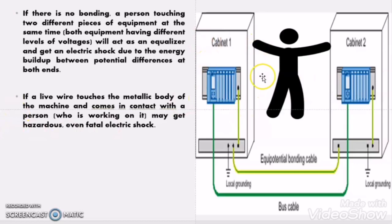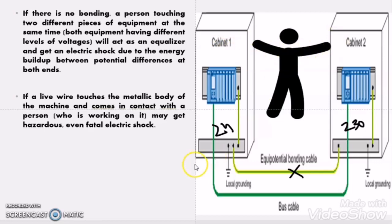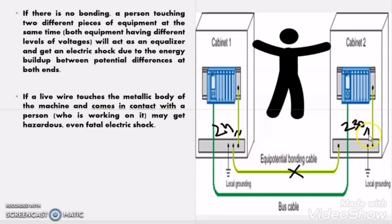Now let us take another scenario. Suppose one panel has a voltage level of 24V and another panel has a voltage level of 230V, and there is no equipotential bonding conductor. If any fault happens in either panel and a person touches both panels at the same time, there is a potential difference between them, so current will flow through the person and he will get electrocuted. But by connecting an equipotential bonding conductor, even though these panels have different operating voltages, at the time of a fault their enclosures will be at the same potential, so the person will not get electrocuted.